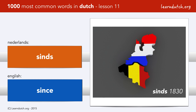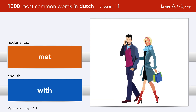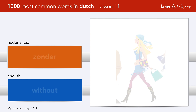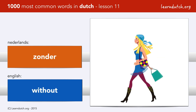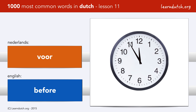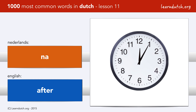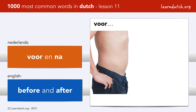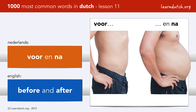Met. Hij is met een vrouw. Zonder. Zij is zonder man. Voor en Na. Voor en Na.